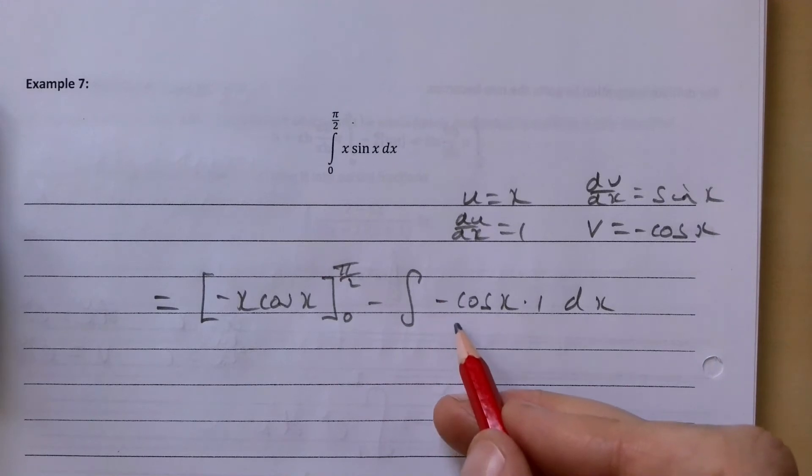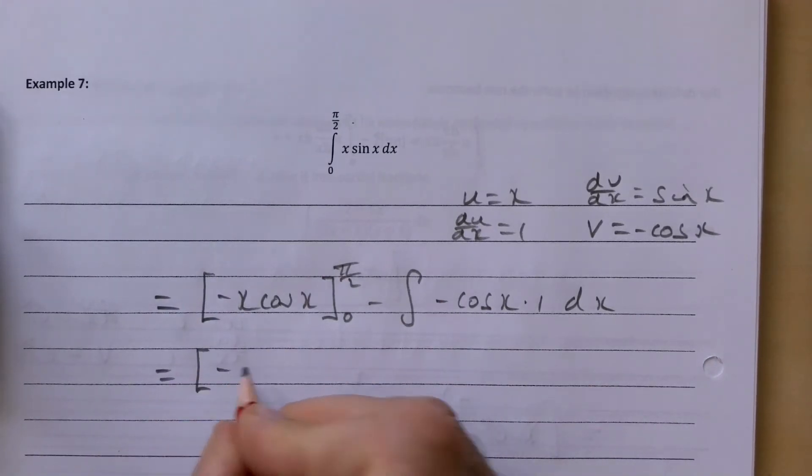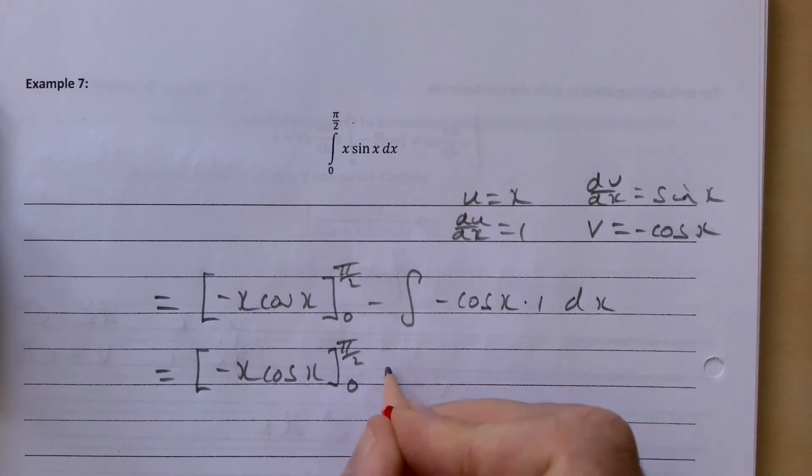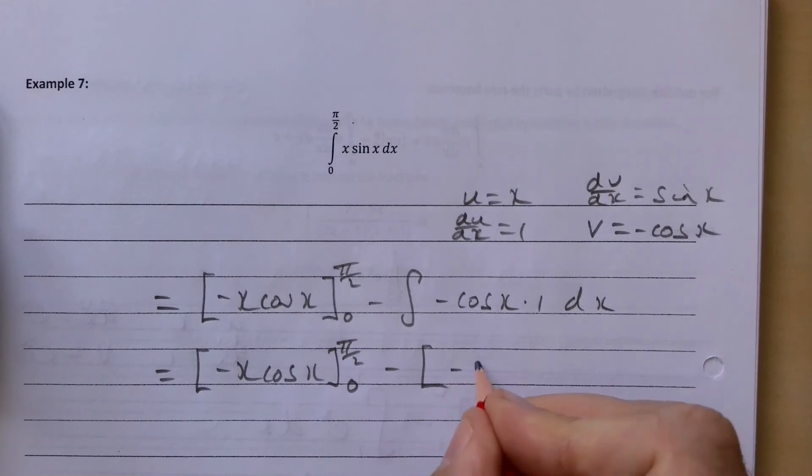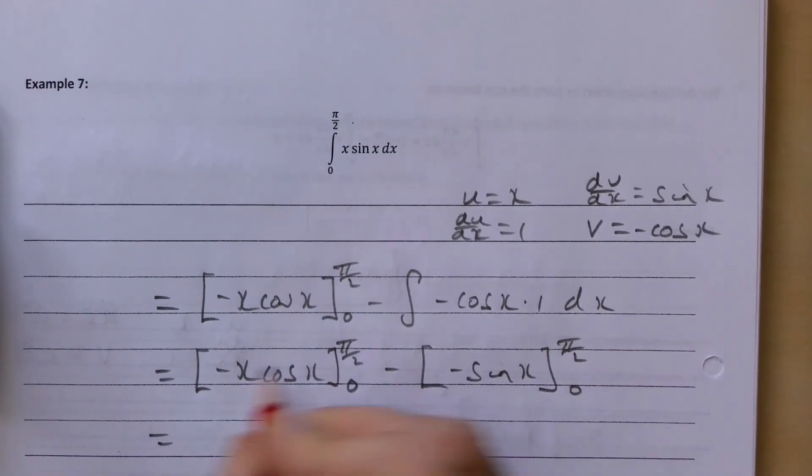So minus x cos x between pi over 2 and 0, plus sin x between pi over 2 and 0. And so subbing in pi over 2 into here we get minus pi over 2 cos pi over 2.